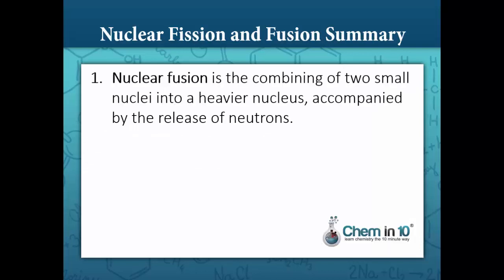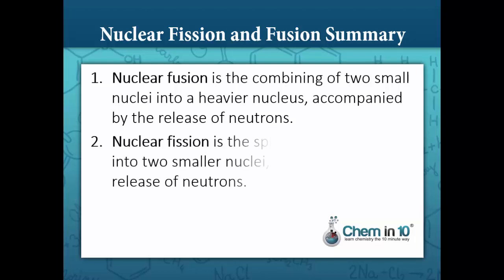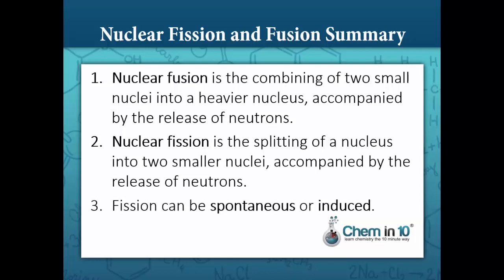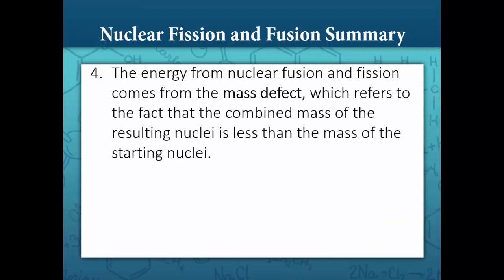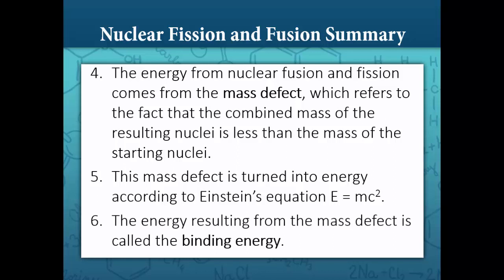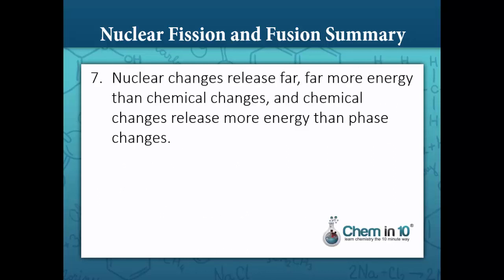Let's summarize what we've learned about nuclear fission and nuclear fusion. Nuclear fusion is the combining of two small nuclei into a heavier nucleus accompanied by the release of neutrons. Nuclear fission, on the other hand, is the splitting of a nucleus into two smaller nuclei accompanied by the release of neutrons. Fission can be spontaneous or induced. The energy from both nuclear fusion and nuclear fission comes from the mass defect, which refers to the fact that the combined mass of the resulting nuclei is less than the mass of the starting nuclei. The mass defect is turned into energy according to Einstein's equation E equals mc squared. The energy resulting from the mass defect is called the binding energy. Nuclear changes release far, far more energy than chemical changes, which release more energy than phase changes.